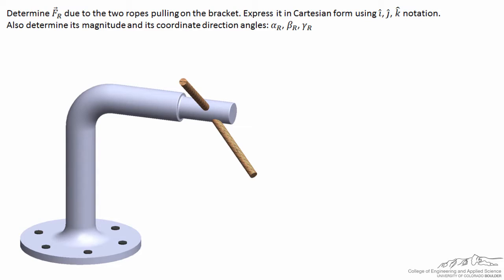In this problem we want to determine the resultant force due to the two ropes pulling on the bracket. We'll want to express it in Cartesian form using I, J, K hat notation, and we'll also want to determine its magnitude and its coordinate direction angles alpha, beta, and gamma.